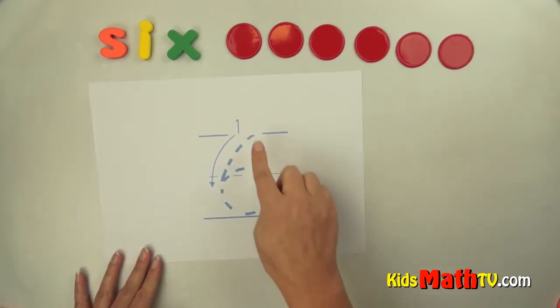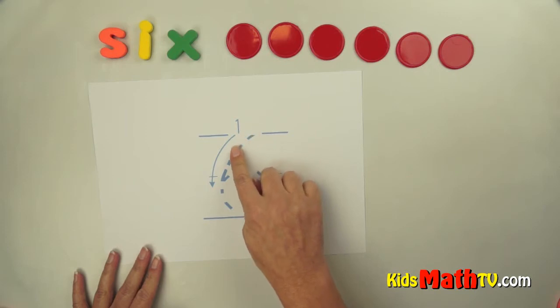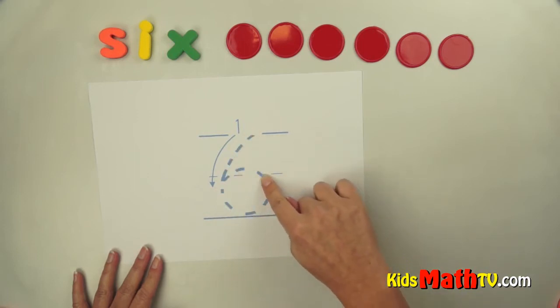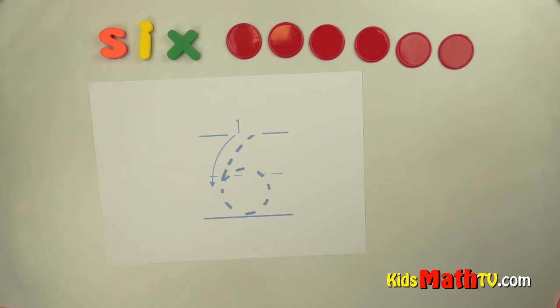we start at the top. We kind of go around and down and then up and around. So it's one stroke with our pencil. We don't pick it up. Down, around, up and around. One stroke in kind of a circle there.